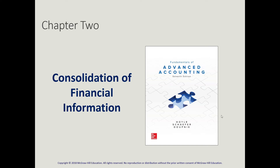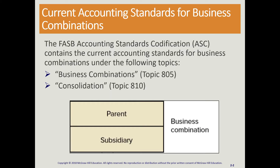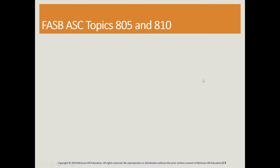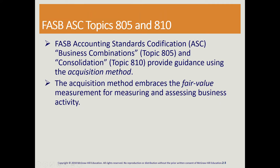Hello everyone. We are looking at Consolidation of Financial Information, Chapter 2 of Fundamentals of Advanced Accounting. This topic is guided by ASC Topic 805 and 810, which looks at the relationship between parent and subsidiary and the business combination. Our discussion will be based on the acquisition method, which is guided by the fair value measurement of the business that is being acquired.